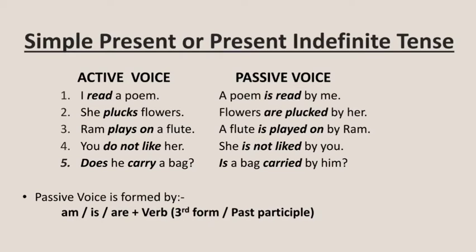Example four: you do not like her — in passive voice it becomes, she is not liked by you. Example five: does he carry a bag? — in passive voice it becomes, is a bag carried by him? So, in simple present tense, passive voice is formed by using am/is/are plus the verb in the third form, that is the past participle. Negative and interrogative sentences can be formed accordingly.